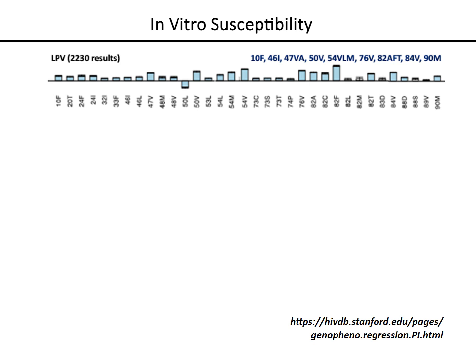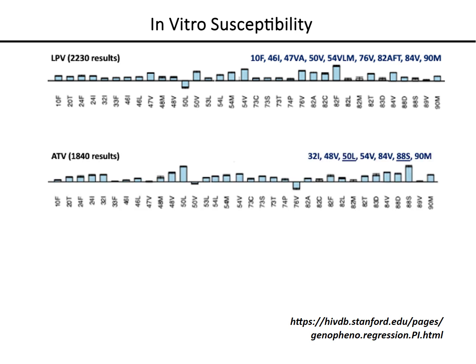This figure shows a similar regression analysis for atazanavir. Atazanavir differs from lopinavir and darunavir because it has a lower genetic barrier to resistance and because there are two mutations, I50L and N88S, which are uniquely associated with atazanavir use and which alone significantly reduce atazanavir susceptibility.